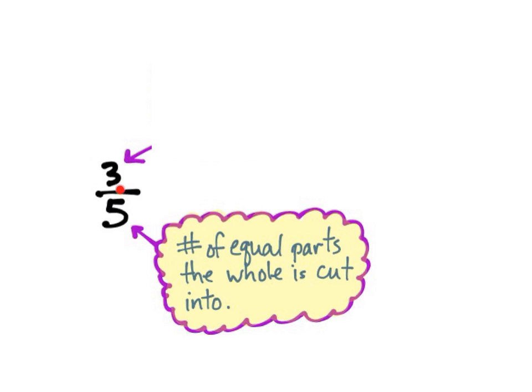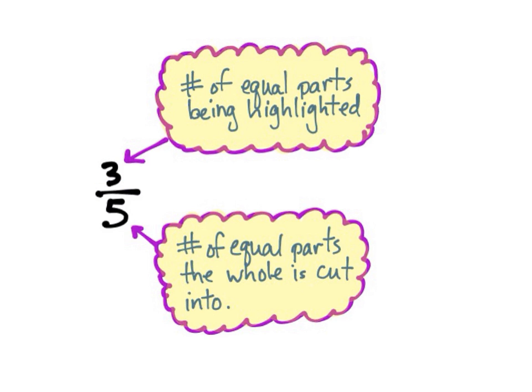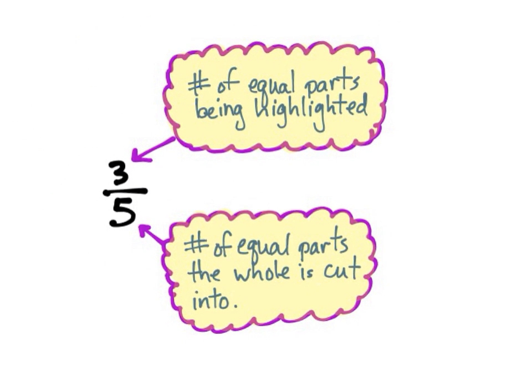And what does that numerator, what does that 3 mean? Well, it means the number of equal parts that are being highlighted or shaded, or maybe that's how many pieces we ate. It's the number of equal parts that are being highlighted in some way.